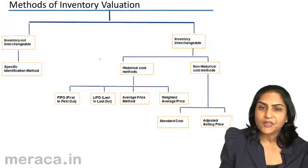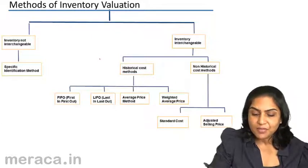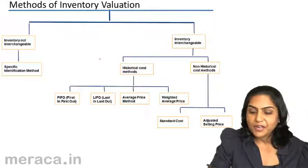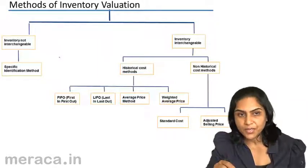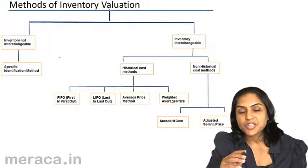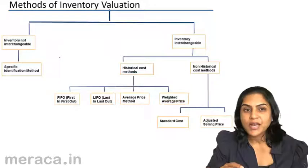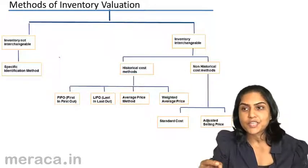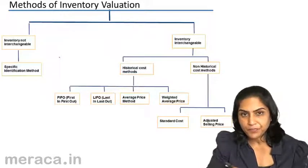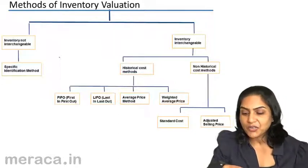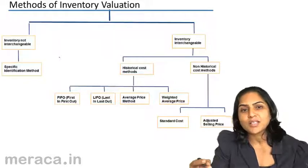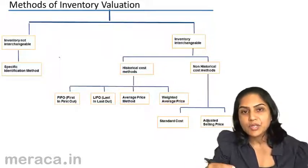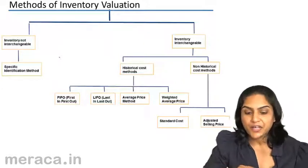Broadly, we can say there are certain items of inventory which are absolutely not interchangeable. They are bought for a specific purpose and can be used only for that specific purpose or that specific job. The other kinds of inventory are interchangeable — each batch is more or less similar and can be used for any of the jobs being done in the factory.